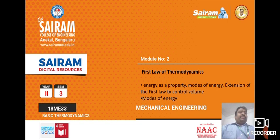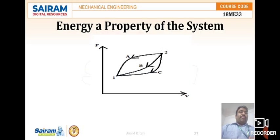So here we will discuss how energy is a property of the system. We consider a system undergoing a cycle, changing from state 1 to state 2 by process A and returning from state 2 to state 1 by process B. These are all drawn on a PV diagram showing the different processes and paths.